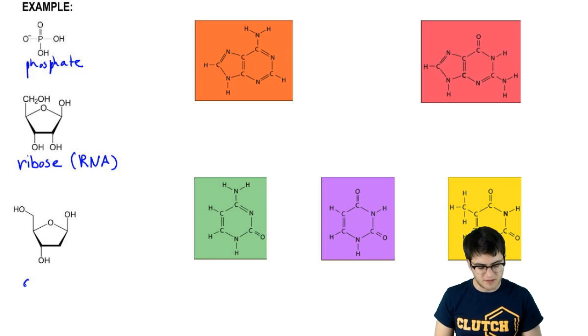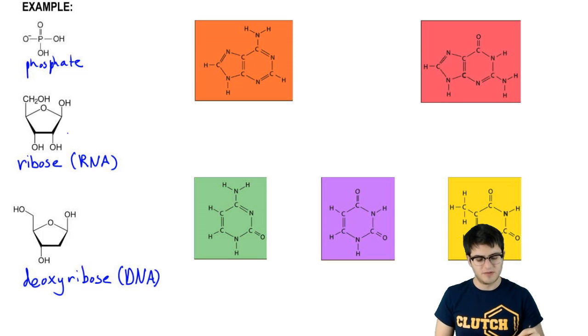Below ribose is deoxyribose. This is the sugar used in DNA. The only difference between these molecules is the presence of this alcohol group, which on DNA is just a hydrogen.